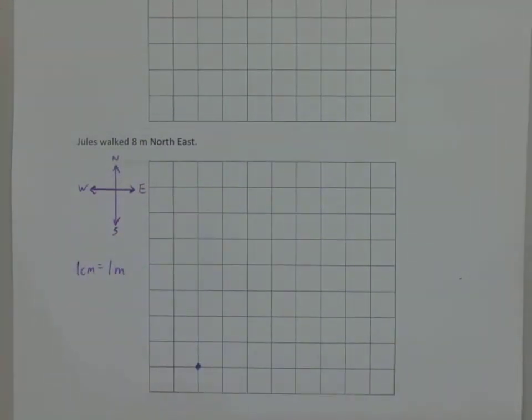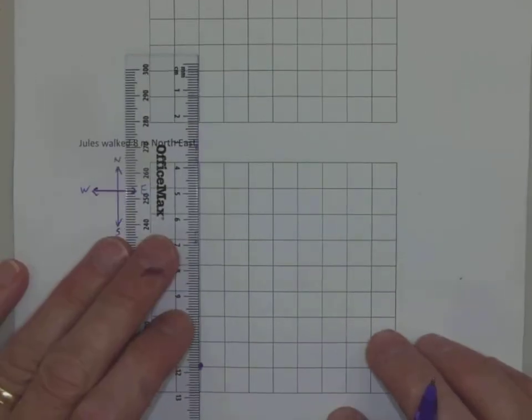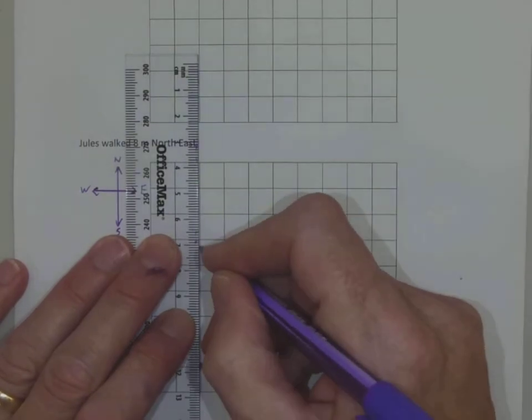So if I'm going eight meters, one centimeter is one meter. Now I need eight centimeters. And because I'm going northeast, I need to go at 45 degrees to the horizontal. But what does that really mean? So if I was just to draw in this construction line here, just for the sake of an illustration.